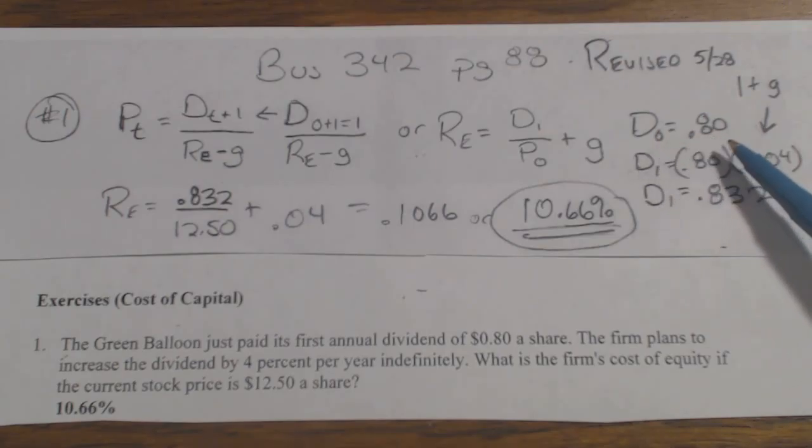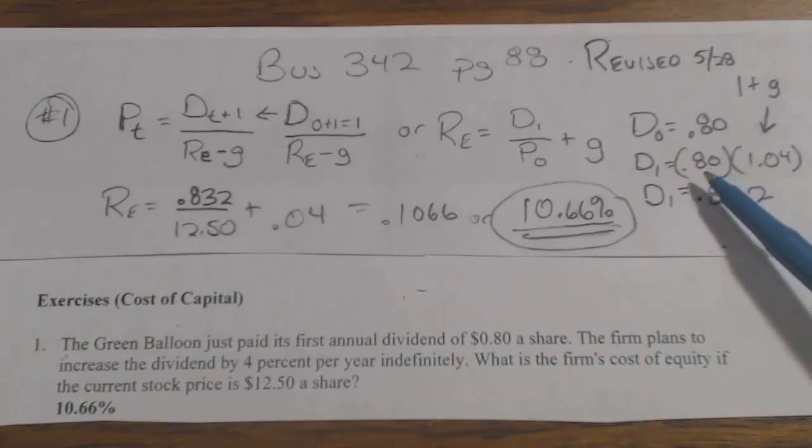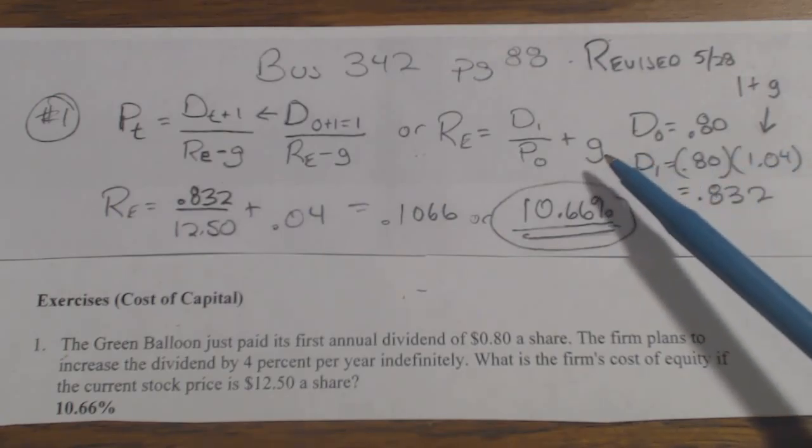Now, to get D1, you've got to take D0 and multiply it times 1 plus the growth rate, because otherwise you'll just come out with the increase in dividend. You want what the dividend 1 will be, so you add 1 to whatever the growth rate is.